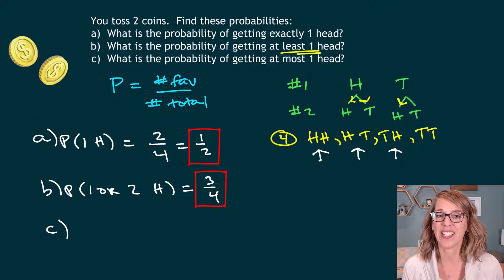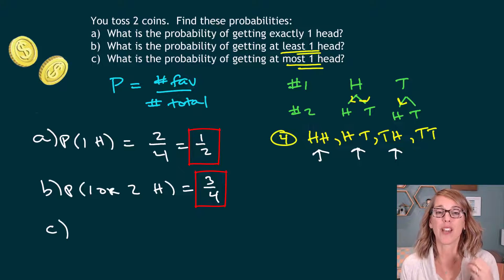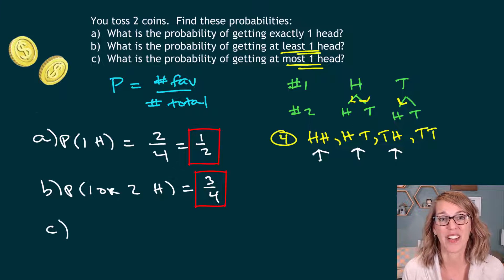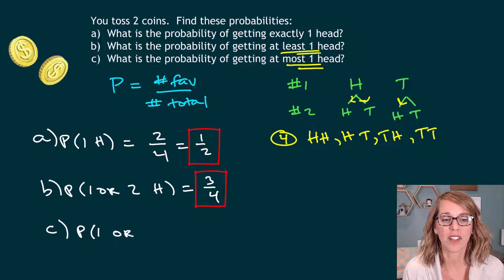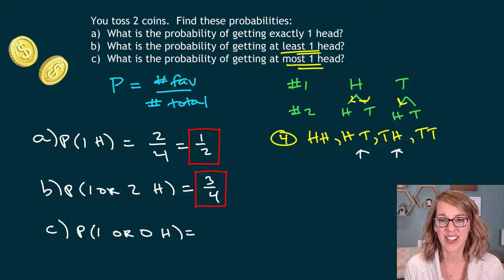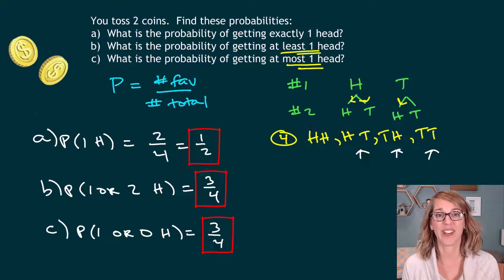Part C is an at most question. If I want the probability of getting at most one head, that means one at the very most, so zero or one head are our cases. Going through the sample space: heads-heads has two, so that's not a favorable outcome. Heads-tails, tails-heads, and tails-tails are all favorable. I again get three out of four, or 0.75.